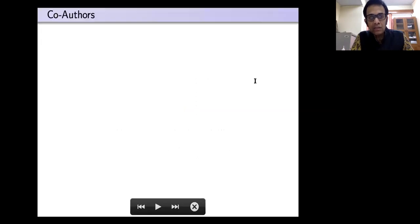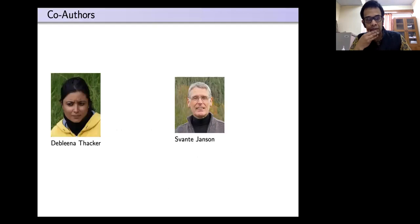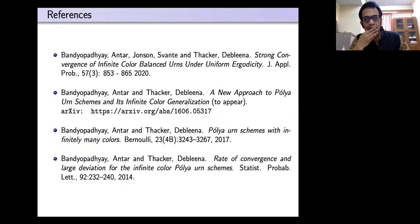These are my co-authors for the talk today. Devlina is currently at Durham University but physically in Copenhagen — this shows how the world is becoming small. Savanti Janssen is in Uppsala, Sweden. I'm going to cover the talk based on four papers which we have written together, all jointly with Devlina, and the last one with Savanti Janssen as well.